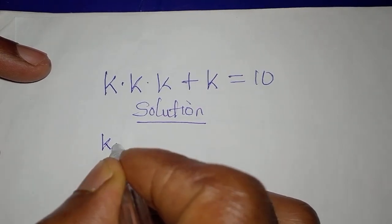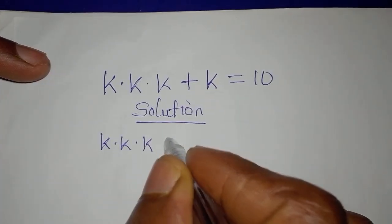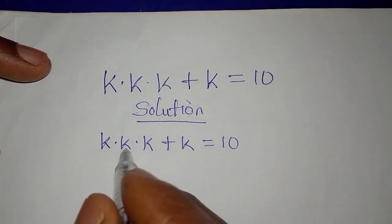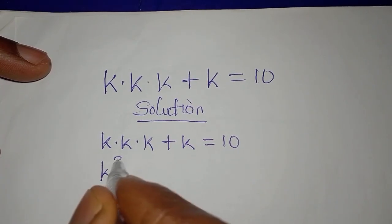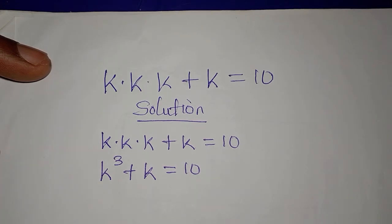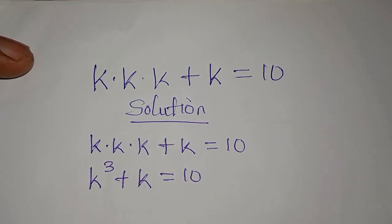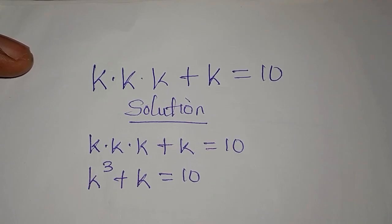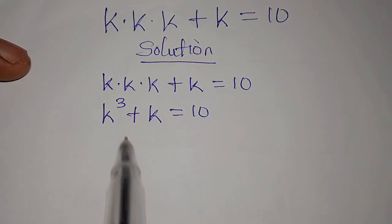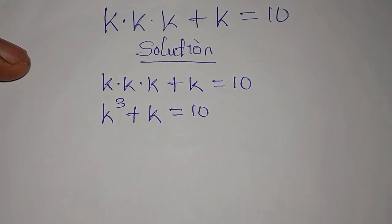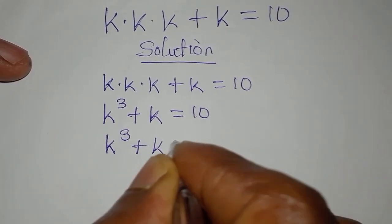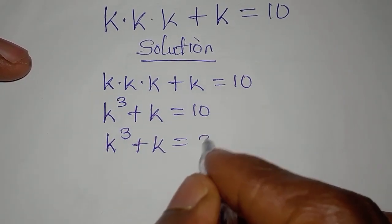Here we have k multiplied by k multiplied by k plus k equals 10. k multiplied by k multiplied by k is k to the power of 3, then plus k, everything is equal to 10. And if you have this kind of problem, the question in your head should be, can I write 10 to be in this form? And if you are able to answer that question, you will see that 10 can be like this, and that would be 8 plus 2.